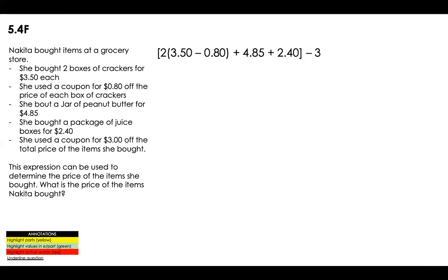Nakita bought items at a grocery store. I already did the annotations for you. Now that the annotations are done, let's read it with the annotations. She bought two boxes of crackers. That means I have two parts, that each of the parts are $3.50 each. She used a coupon for $0.80 off the price of each box of crackers. That means you're taking $0.80 out of the price of each box.